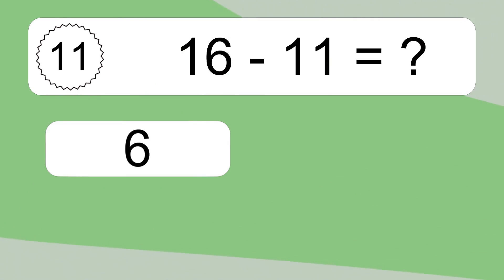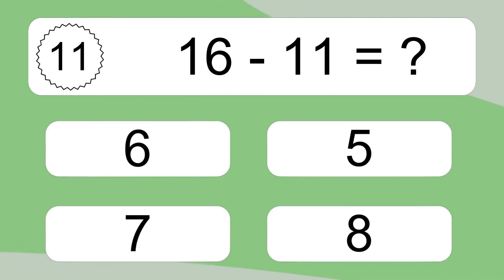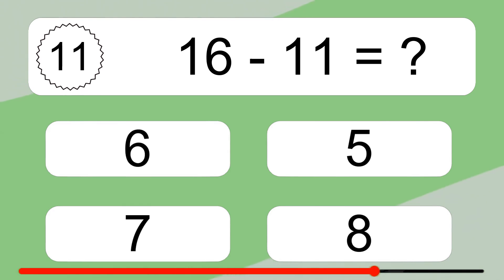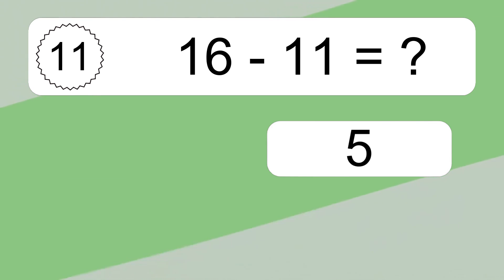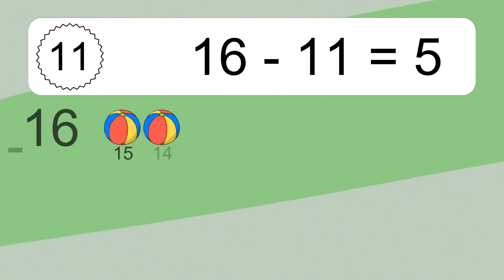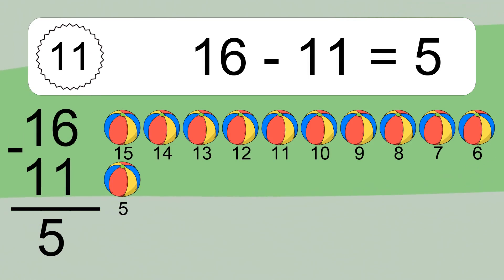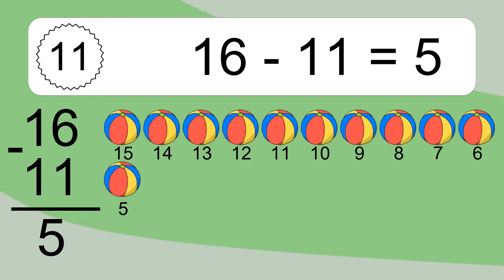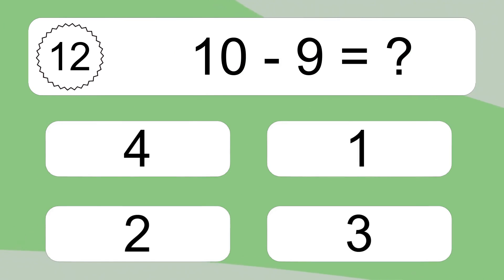16 minus 11 equals what? 16 minus 11 equals 5. Let's count it: 15, 14, 13, 12, 11, 10, 9, 8, 7, 6, 5.